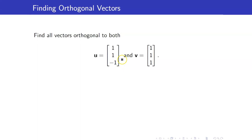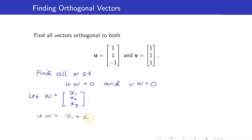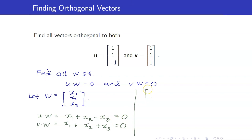For the next example, we want to find all vectors orthogonal to both u and v. We look for all w = (x1, x2, x3) such that u·w = 0 and v·w = 0. From u·w, we get x1 + x2 - x3 = 0, and from v·w we get x1 + x2 + x3 = 0.